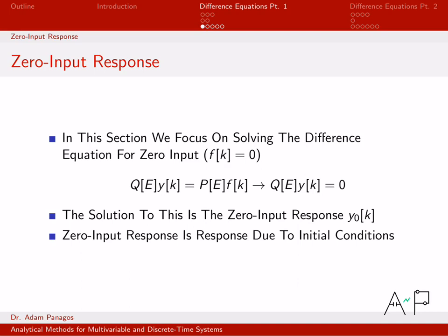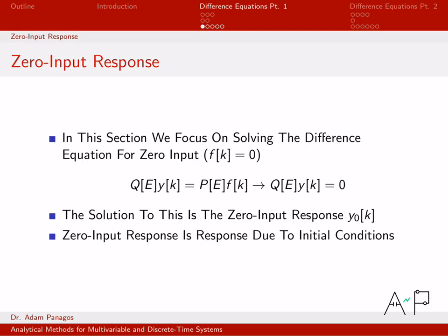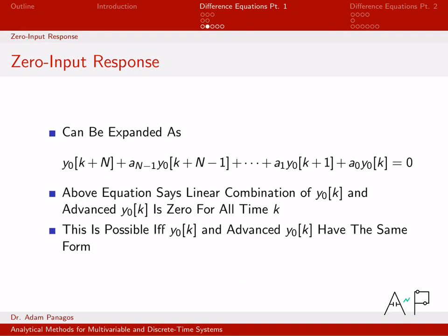If the input f(k) is zero, then the compact difference equation turns into Q(E)·y(k) = 0, and that is the equation we need to solve for the zero-input response. We use the notation y₀ to indicate the zero-input response solution. The only way to get a non-zero answer is if the system had some initial conditions. If the system had some initial state stored in memory and you let it continue over time, the output we observe is the zero-input response, due entirely to those initial conditions.